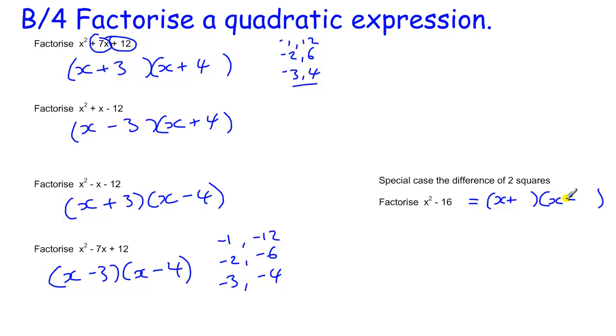Because this has a form where you've got x plus a number and then x minus a number. And that number is the same number because the middle bit, because we've got x squared here, plus no x, minus 16.